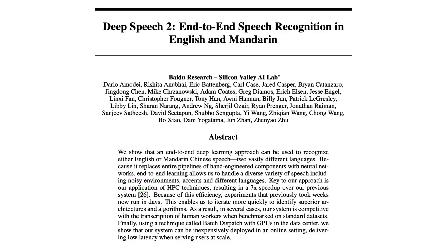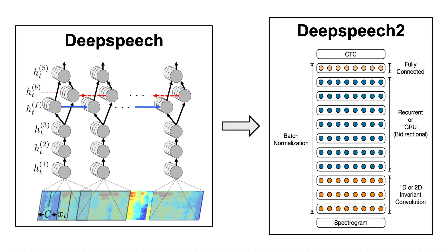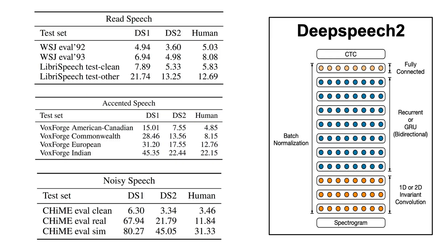The first item in today's video is Deep Speech 2: End-to-End Speech Recognition in English and Mandarin, which, as the title suggests, introduces Deep Speech 2 — an improved version of Deep Speech that uses HPC techniques to speed up experimenting time, being the first speech recognition system able to achieve close to human-level performance on various transcription benchmarks. Definitely read this paper if you are interested in speech recognition and how this field has evolved.